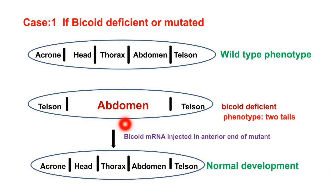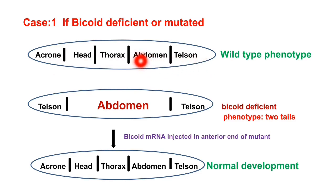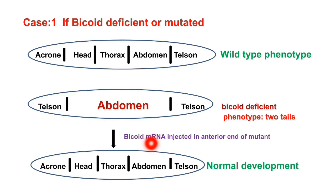In detail: for the bicoid mutation case, in a wild-type embryo all body parts are present in normal sequence from acron to telson. In a bicoid mutant, since bicoid is for head and thorax formation, there is a lack of anterior structure — no head or thorax. However, if bicoid mRNA is injected into the anterior end of this mutant, embryo development becomes normal again.